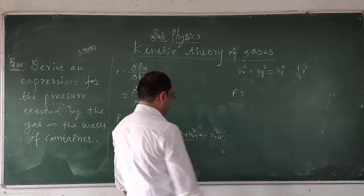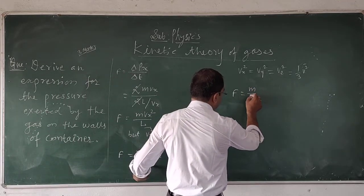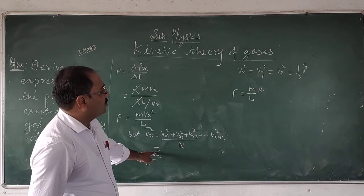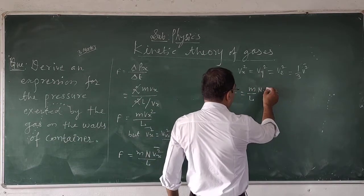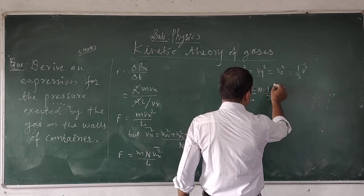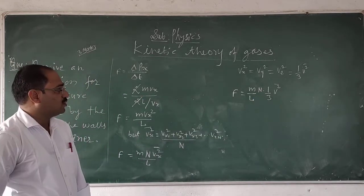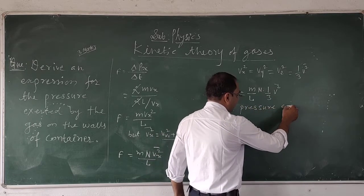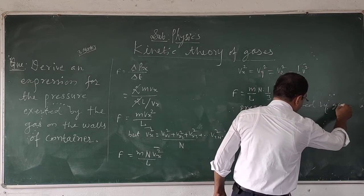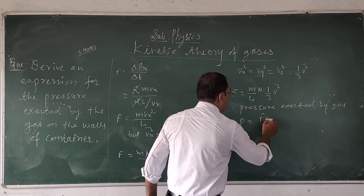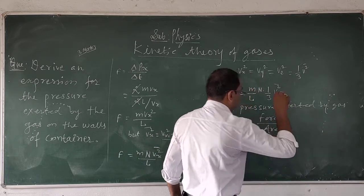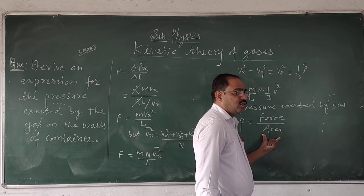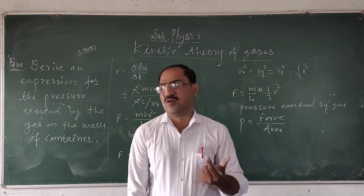Therefore, this force will be equal to M upon L into Vx squared mean. Here M is the mass, L is the number of particles. The pressure exerted by the gas is equal to pressure equals force upon area. This is the basic definition of pressure — pressure equals force divided by area.